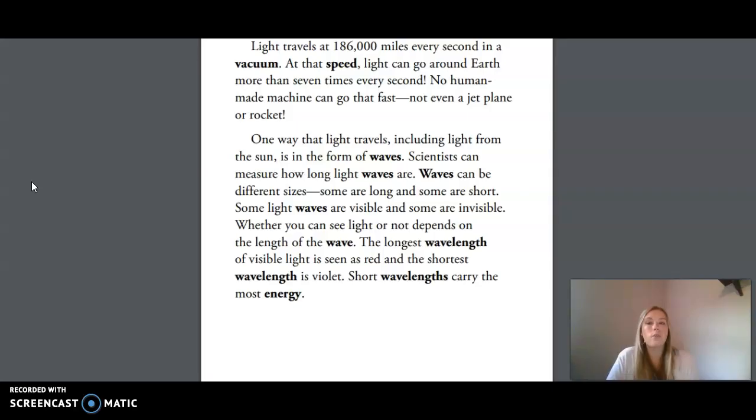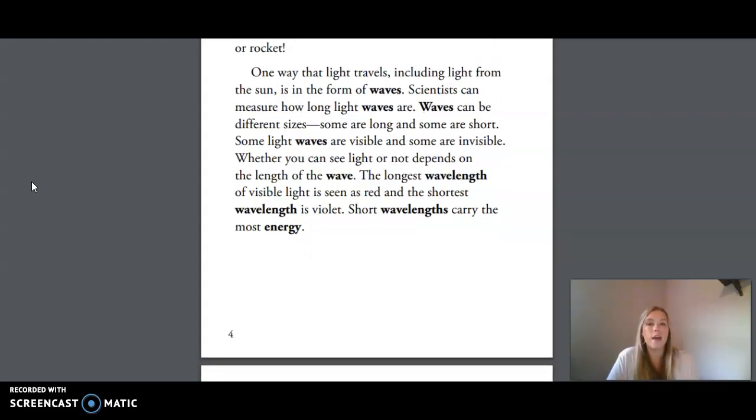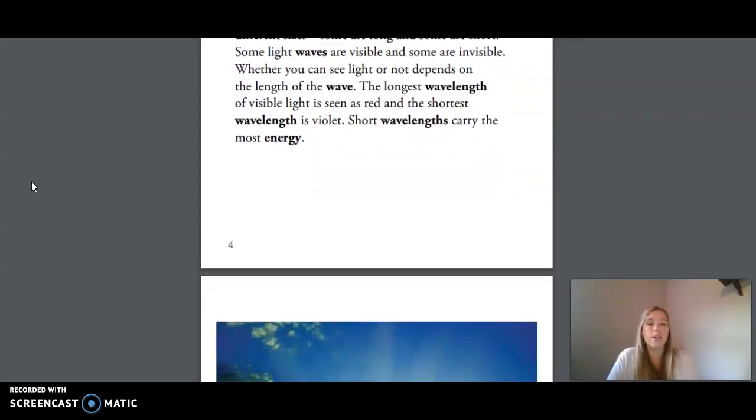Scientists can measure how long light waves are. Waves can be different sizes. Some are long and some are short. Some light waves are visible and some are invisible. Whether you can see light or not depends on the length of the wave. The longest wavelength of visible light is seen as red and the shortest wavelength is violet. Short wavelengths carry the most energy.